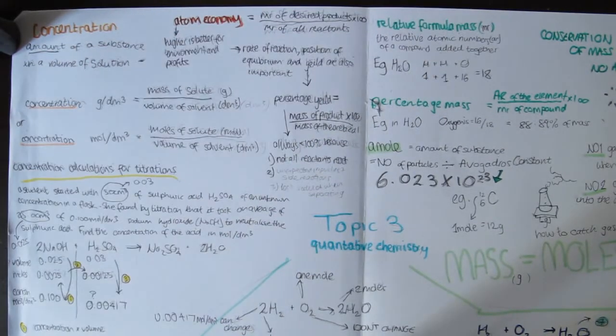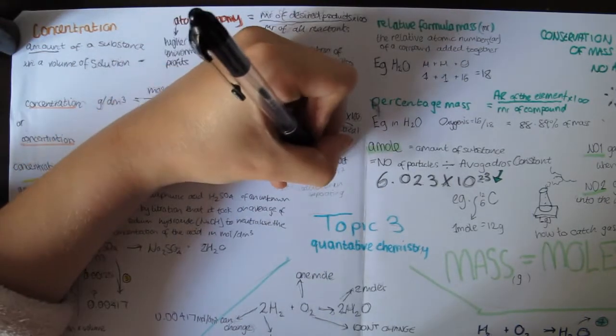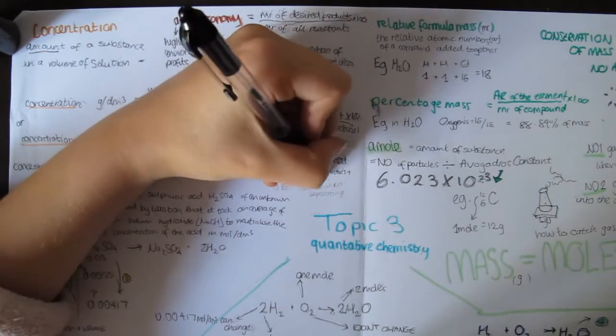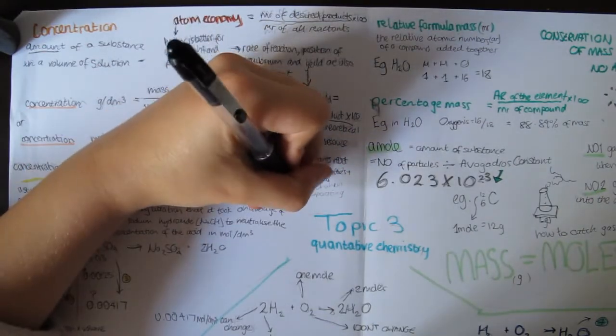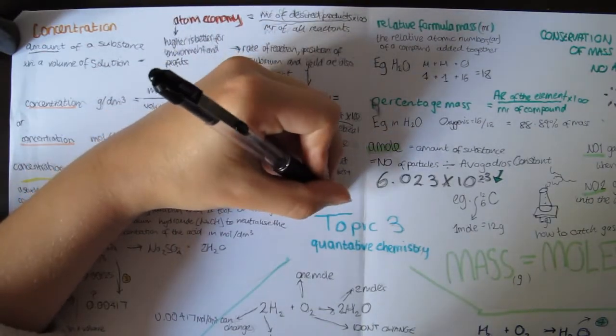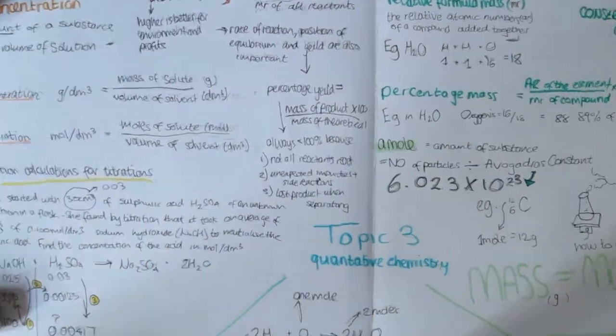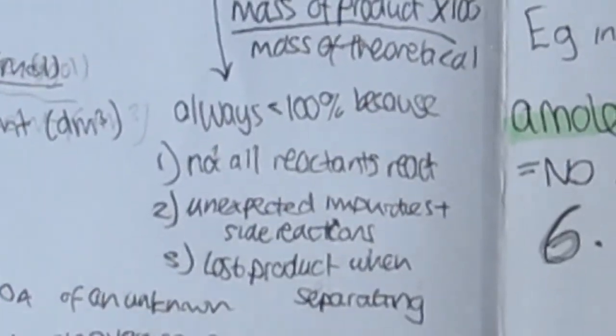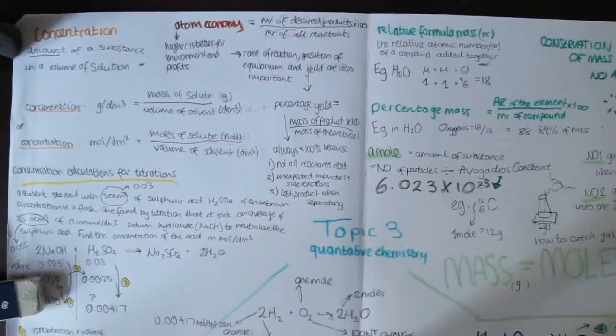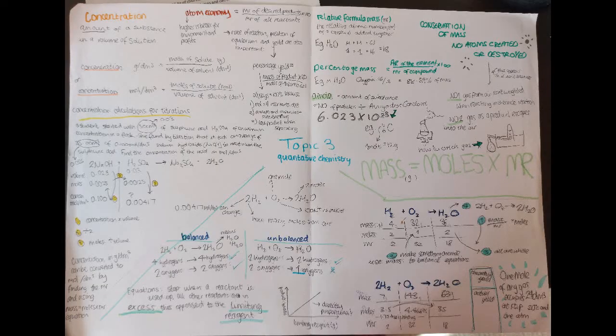The percentage yield is always less than 100% because of three things. Number one, not all reactants make the products, for example in equilibrium reactions. Number two, there might be unexpected side reactions because of impurities in the products. Number three, some of it can get lost when you separate it from the reaction mixture.